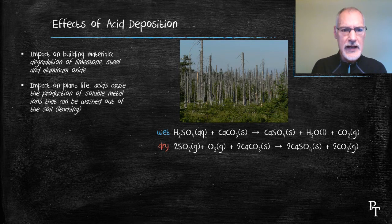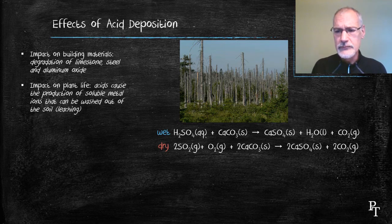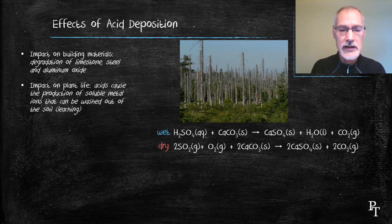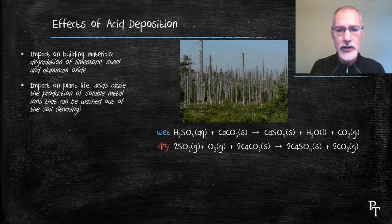We also have the effects of acid deposition on plant life. What essentially acids do is they make minerals more soluble in water, in particular magnesium. So in this particular picture on the right hand side, we can see the removal of needles, needles needing magnesium to produce chlorophyll. The leaching and removing of magnesium ions from the environment essentially has killed this forest. This process of removing minerals by washing them away is called leaching.